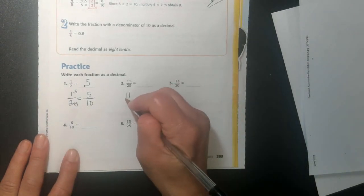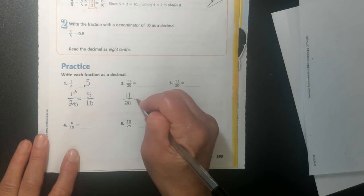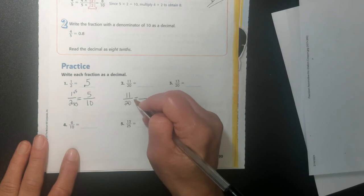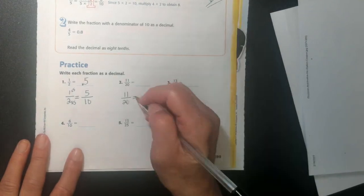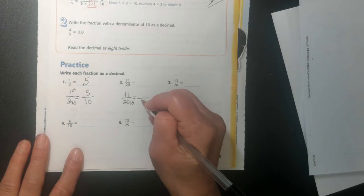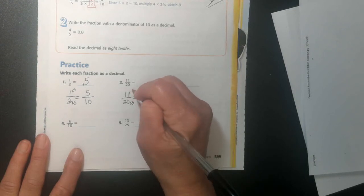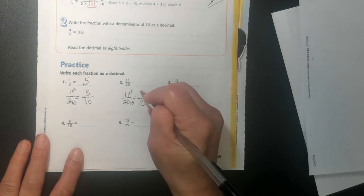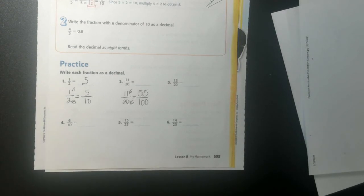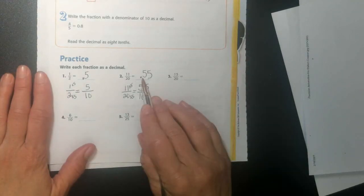My next one, 11 over 20. So to turn 20, I'm going to turn 20 into a hundred. I could turn it into a 10 by dividing by 2, but 11 divided by 2 doesn't work. So I can't do that. So I'll turn it into a hundred instead. I'll multiply it times 5. 20 times 5 is 100. And whatever I do to the bottom, I have to do to the top. 11 times 5 is 55. So my answer is 0.55.